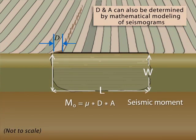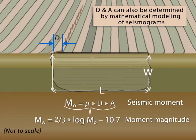That equation is then plugged into the moment magnitude equation, which is used by seismologists to measure the size of earthquakes in terms of the energy released, not just the amplitude of the recorded waves. The constants in the moment magnitude scale are chosen such that at smaller magnitudes, the moment magnitude matches the Richter scale.